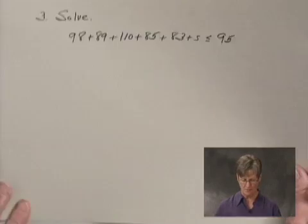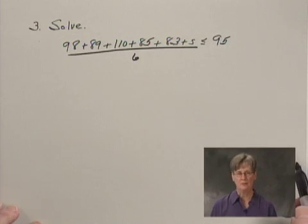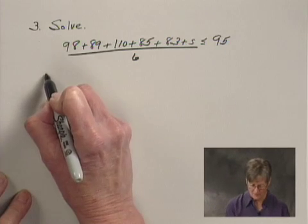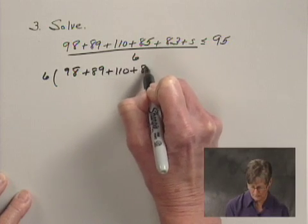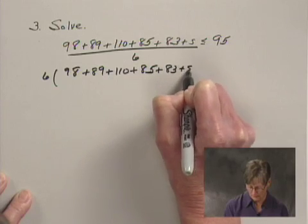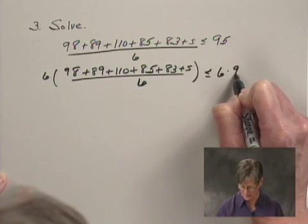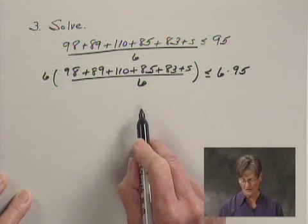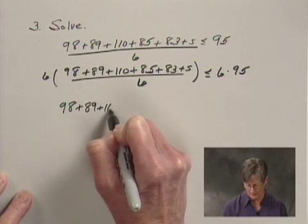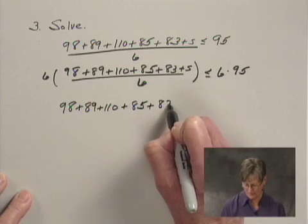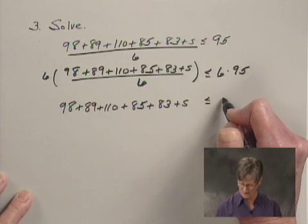We have an inequality to solve. This is all over six. We begin by multiplying both sides of the inequality by six to clear the fractions. On the left-hand side, we're left with the numerator: 98 plus 89 plus 110 plus 85 plus 83 plus S, and that is less than or equal to six times 95, which is 570.